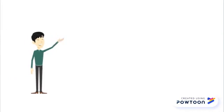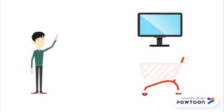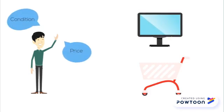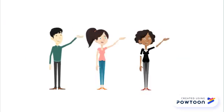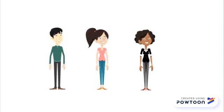People decide which products or services to purchase, watch, or look at based on different aspects of them. Imagine, for example, wanting to purchase clothes.